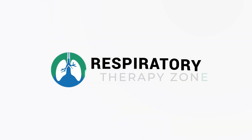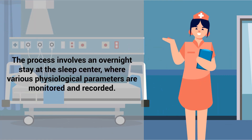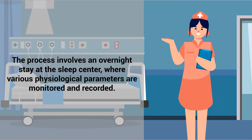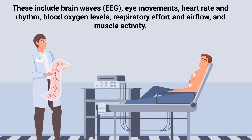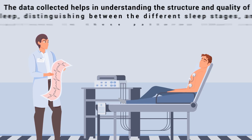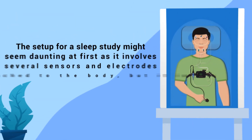The process involves an overnight stay at the sleep center where various physiological parameters are monitored and recorded. These include brain waves, eye movements, heart rate and rhythm, blood oxygen levels, respiratory effort and airflow, and muscle activity. The data collected helps in understanding the structure and quality of sleep, distinguishing between the different sleep stages, and identifying any disruptions in these patterns that could indicate a sleep disorder.